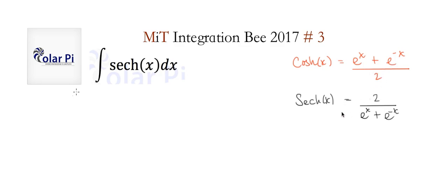So sech x is 1 over cosh x. Therefore, the first thing we're going to do is replace sech x with 2 divided by e to the x plus e to the minus x.